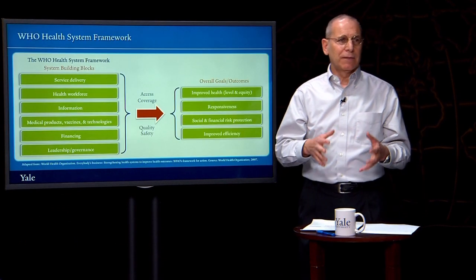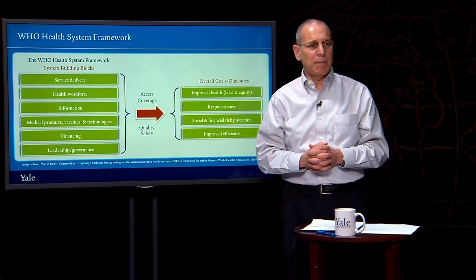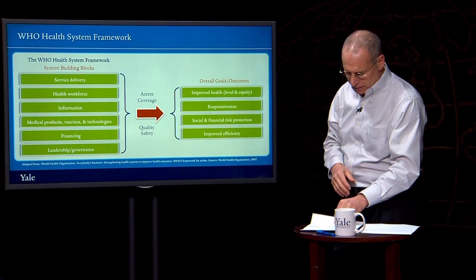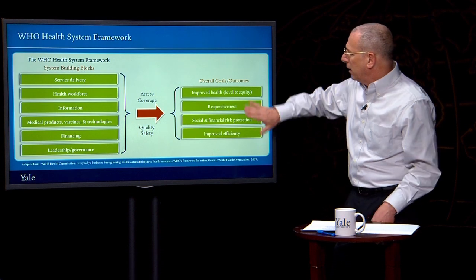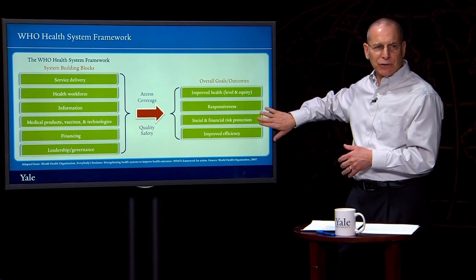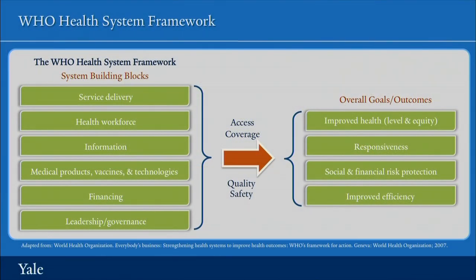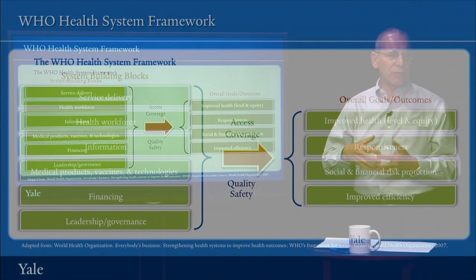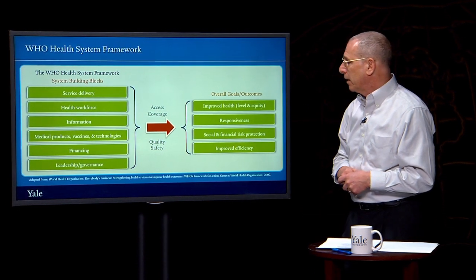The World Health Organization has laid out a framework for thinking about the desired outcomes from a health system and the inputs it takes to achieve them, as well as the way in which it hopes those inputs will be combined. Starting with outcomes: what we're really after is improved health of our people in equitable ways. In order to achieve that, the system needs to be responsive to the needs of the people and their social mores, it has to provide social and financial risk protection, and it should carry out its work in the most efficient and effective ways possible.